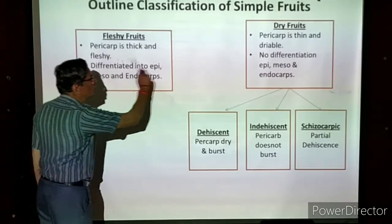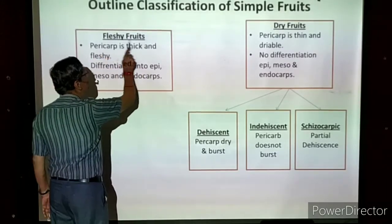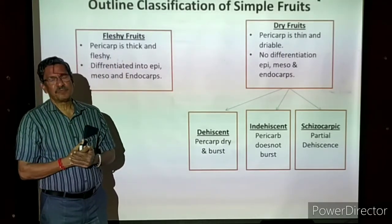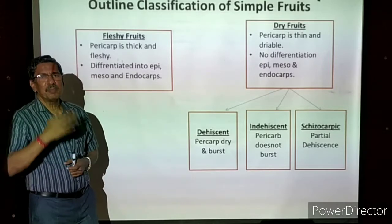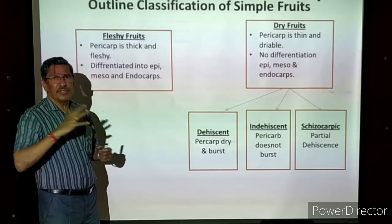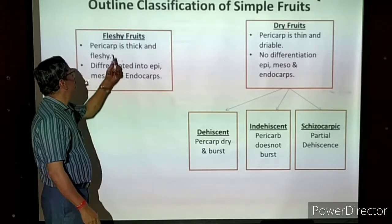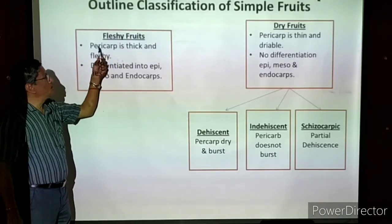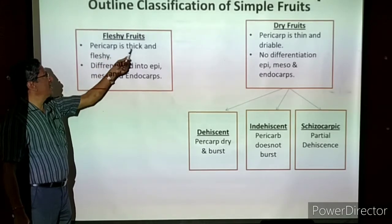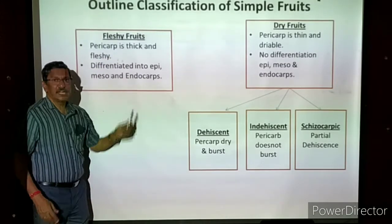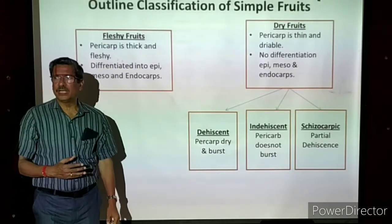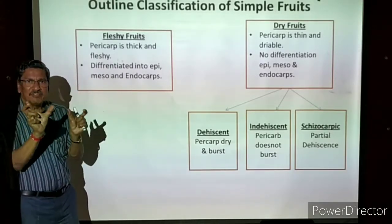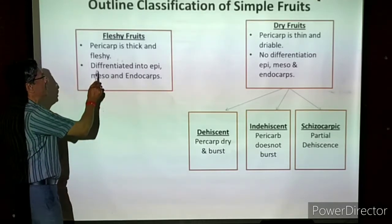Simple fruits are further classified into two groups. The first is fleshy fruits, where the pericarp — the wall of the fruit — is thick and fleshy, like mango. It is very thick. The pericarp is differentiated into three divisions. For example, taking a vertical section of mango, three divisions are present in the thick and fleshy part.